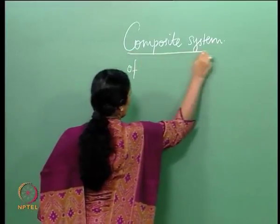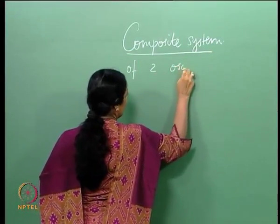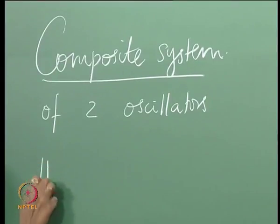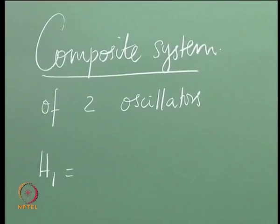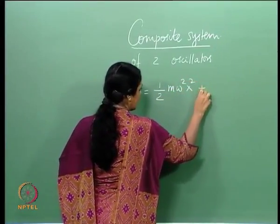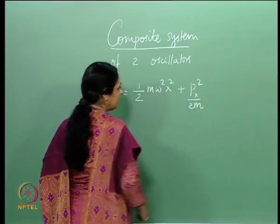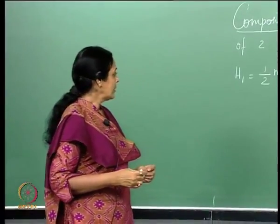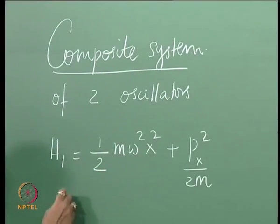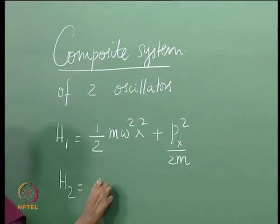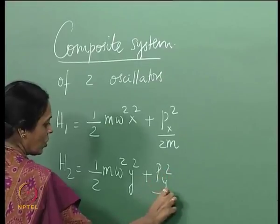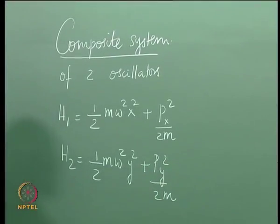It is a composite system of 2 oscillators. The Hamiltonian for the first oscillator, H₁, is simply (1/2)mω²x² + pₓ²/2m, where m is the mass, x is the coordinate, and pₓ is the linear momentum corresponding to x. The other oscillator has the same mass and the same ω, but is along the y direction, so I have y and p_y.